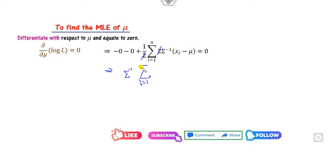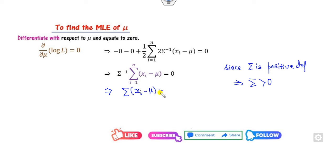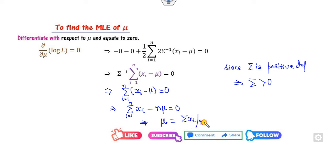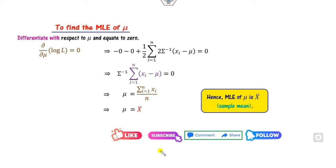Applying the derivative rule gives −(1/2)·2·Σ⁻¹·Σᵢ(xᵢ − μ) = 0. Since Σ is positive definite, Σ⁻¹ ≠ 0, so Σᵢ(xᵢ − μ) = 0. Opening the bracket: Σxᵢ − nμ = 0, so μ̂ = Σxᵢ/n, which is the sample mean x̄. Therefore, the MLE of μ is the sample mean.